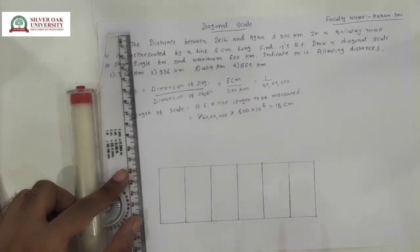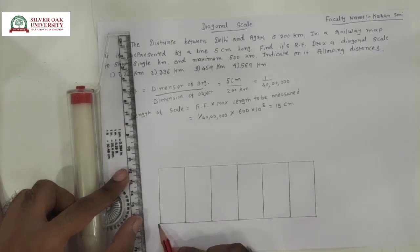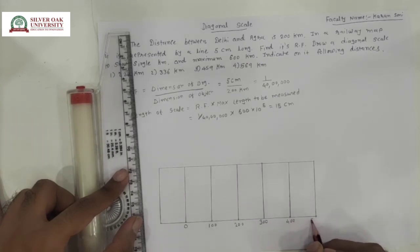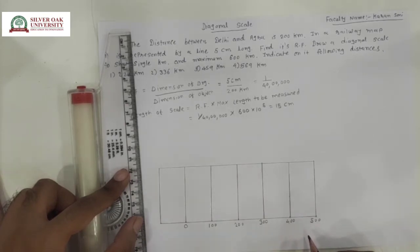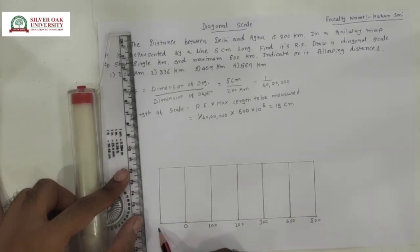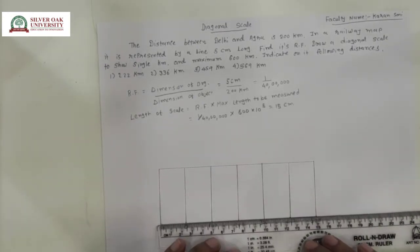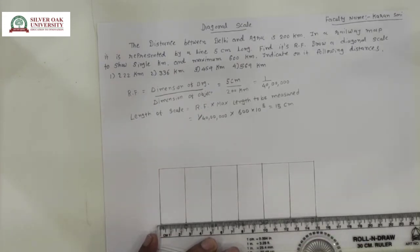Now this 15 cm line has been divided into 6 equal parts. We have to draw the scale representing 600 km, so we divide the first division using the diagonal scale method. The remaining 5 divisions represent 100, 200, 300, 400, and 500 km — totaling 5 equal parts. The first division represents 100 km, and we divide this first equal part into 10 equal divisions. This 2.5 cm part is divided into 10 equal parts.